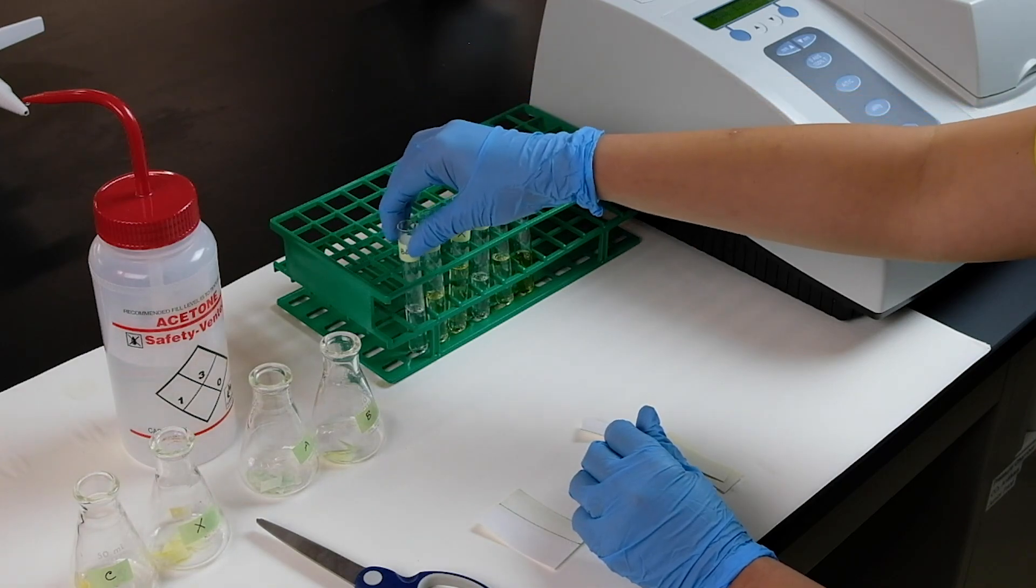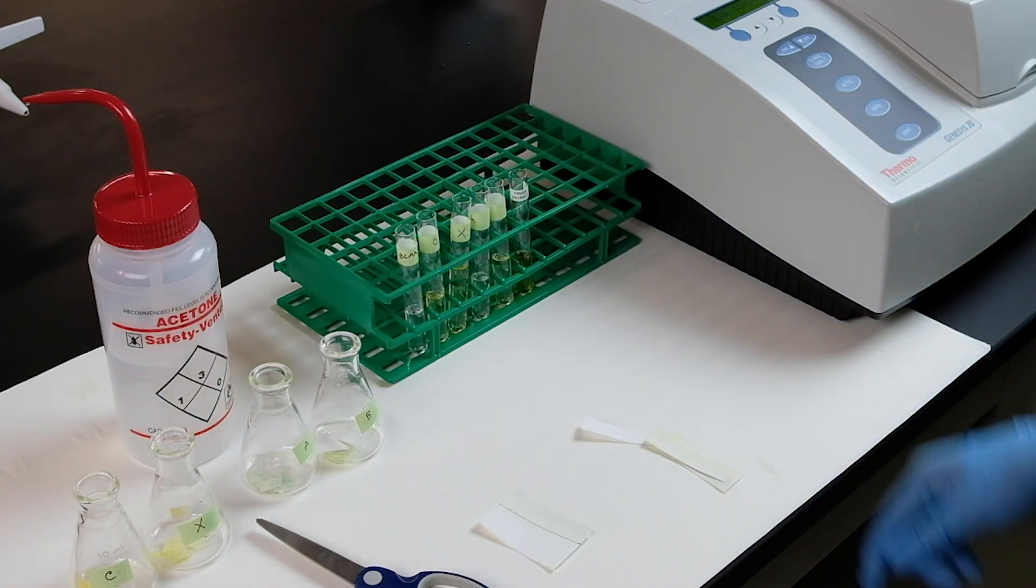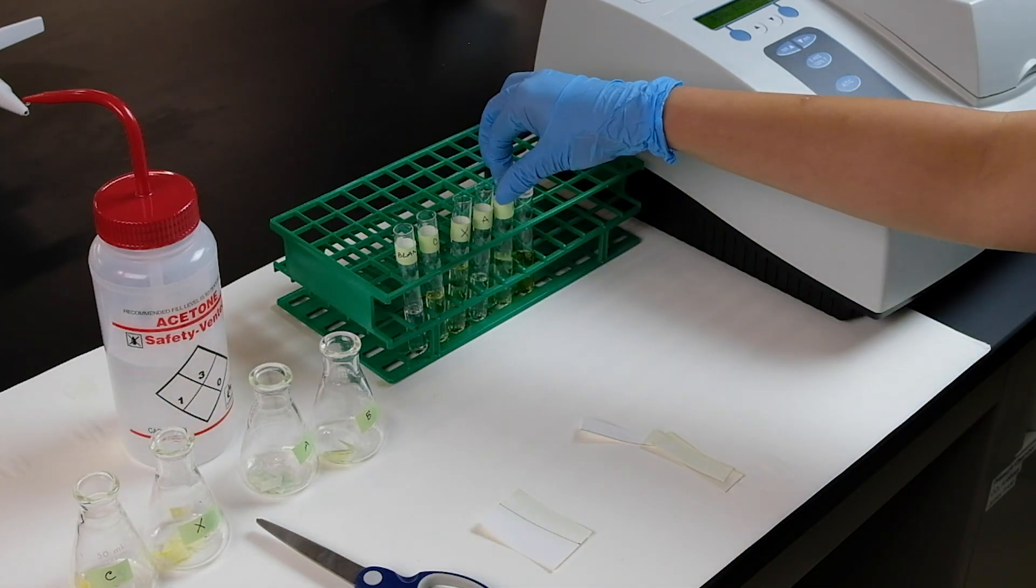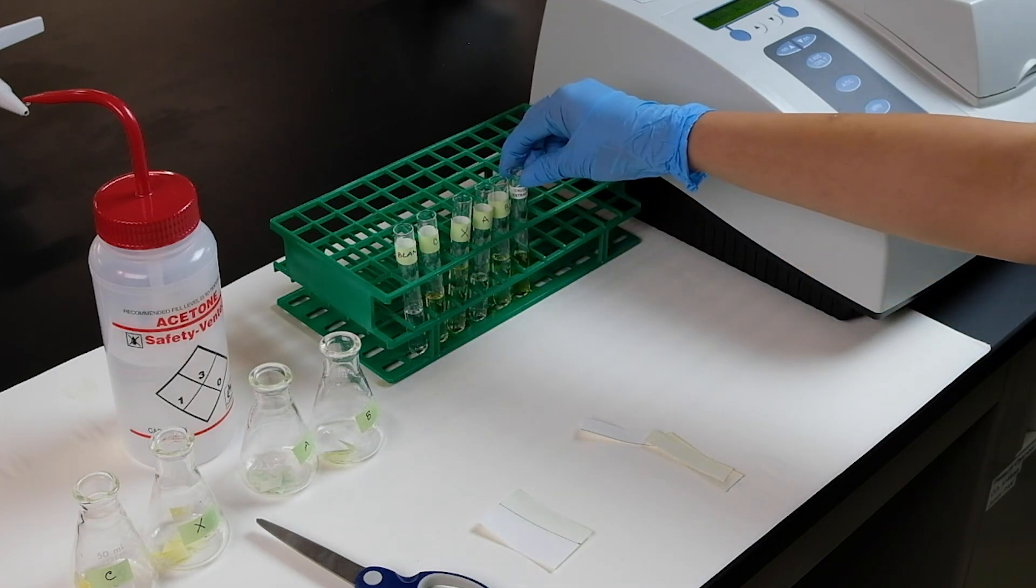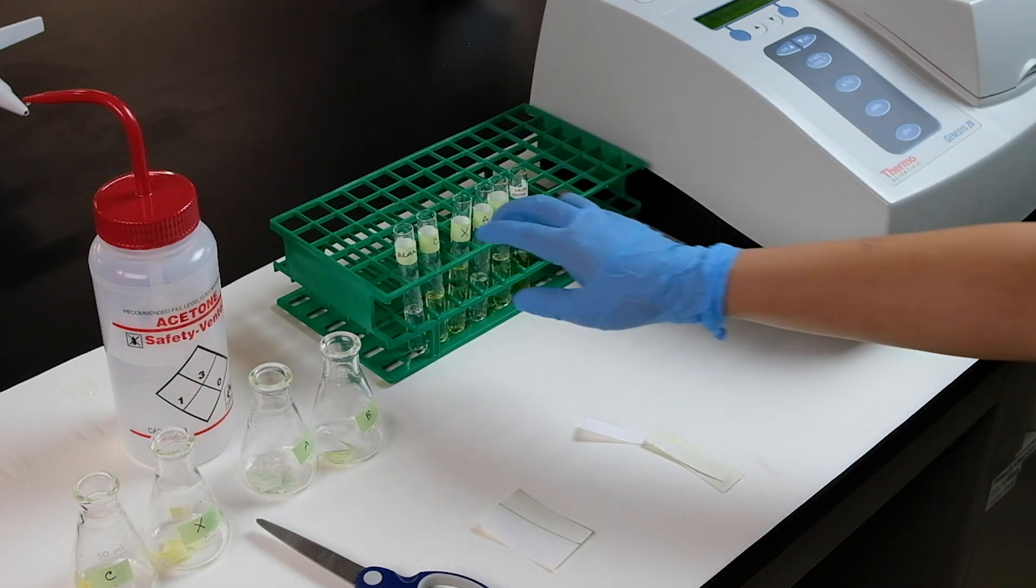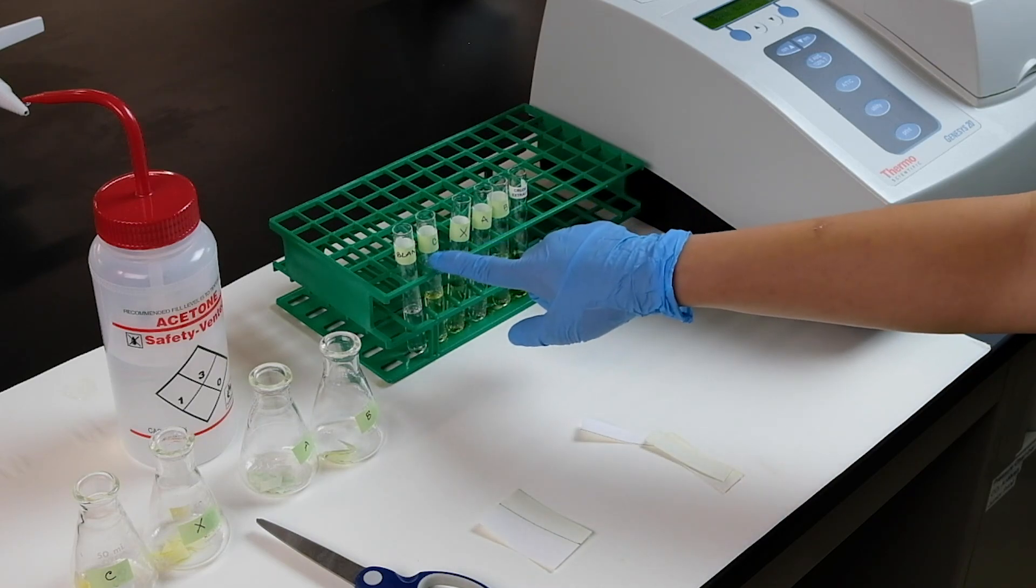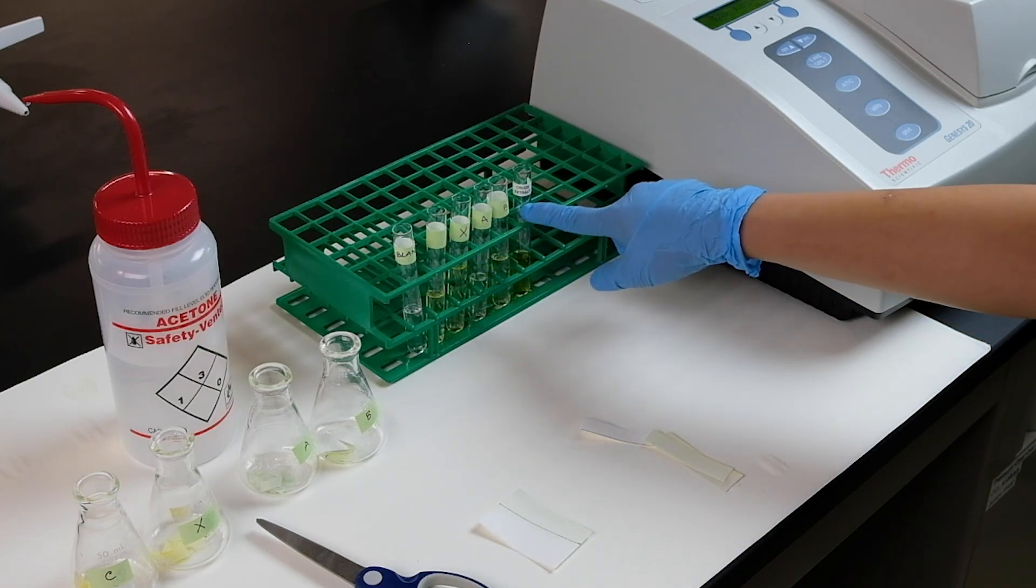At each wavelength, you would have six test tubes to read: the blank, four of your pigments, and the crude extract. But then, you only have five values: four pigments and crude extract.